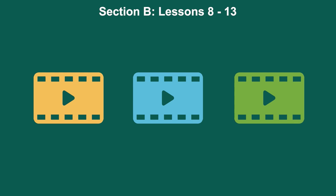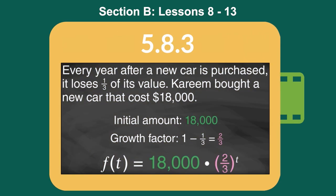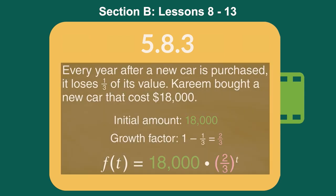I'd like to suggest pulling out some specific pieces for students to watch and discuss — it's what I would do in class. For instance, in lesson 5.8.3, there's a really nice explanation for why the growth factor or depreciation factor is not the one-third number that students tend to pull out of the problem's wording.